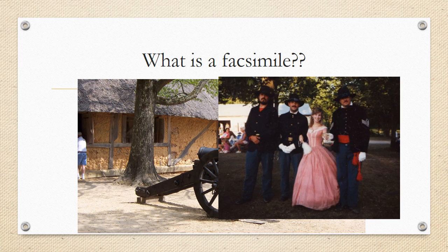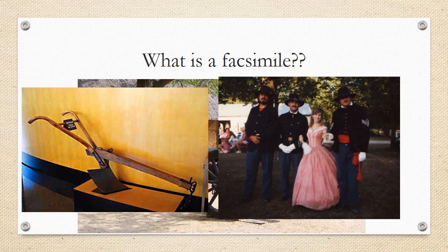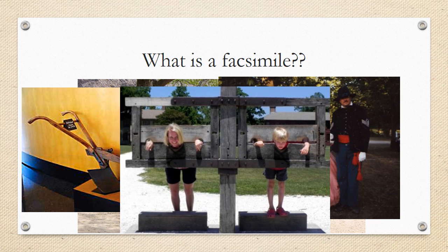Facsimiles can also be clothing. This is a Civil War ball up in Gettysburg and you can see her hoop skirt and the men's uniforms — all reproductions of real clothing that Civil War soldiers and women at that time wore. This is a facsimile of a plow that's in a museum; it gives you an idea of what a plow looked like in the 1800s. And if you've ever been to Colonial Williamsburg, the stocks are recreated — a reproduction of what would have housed criminals or people who had disobeyed community laws back then.